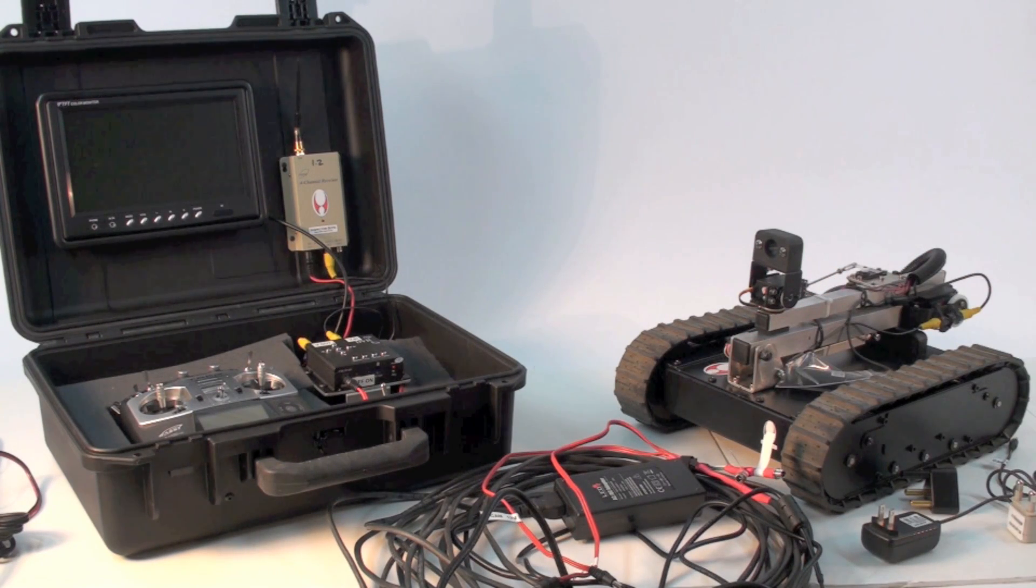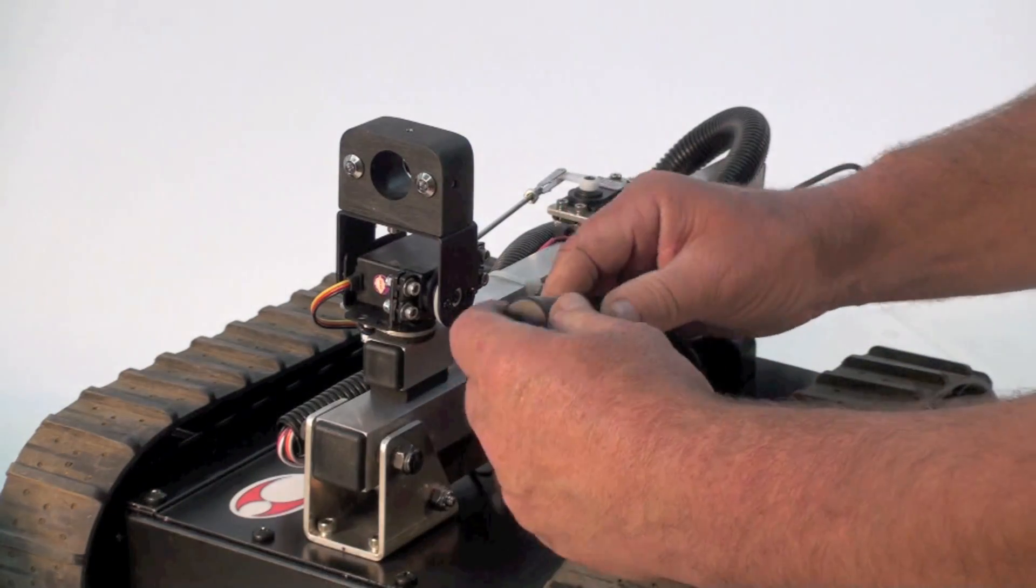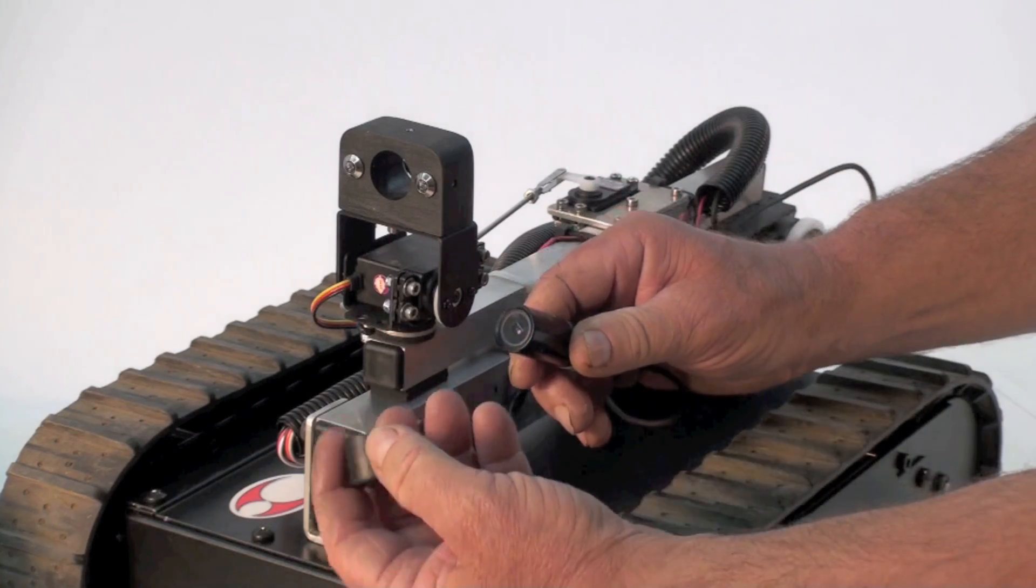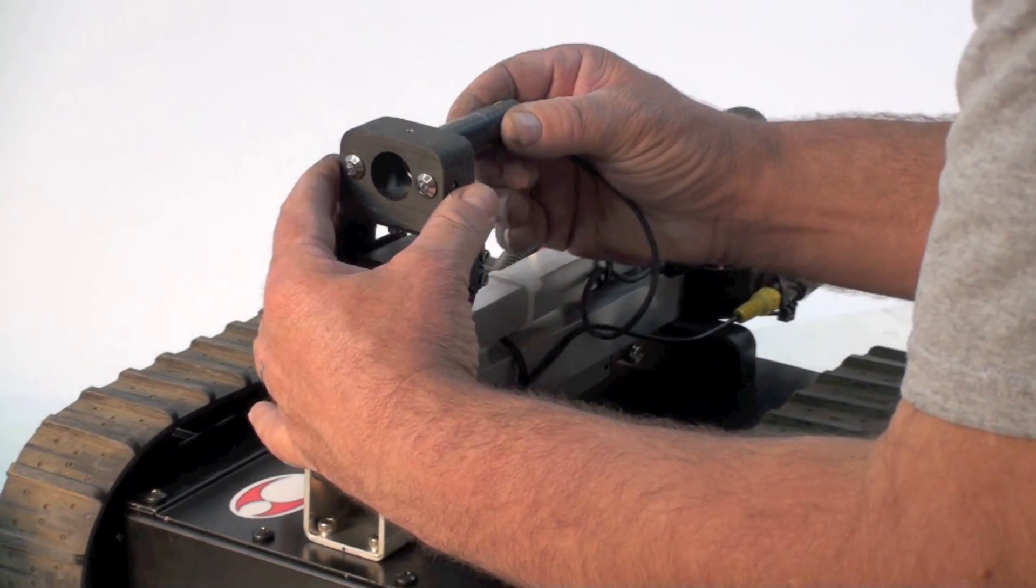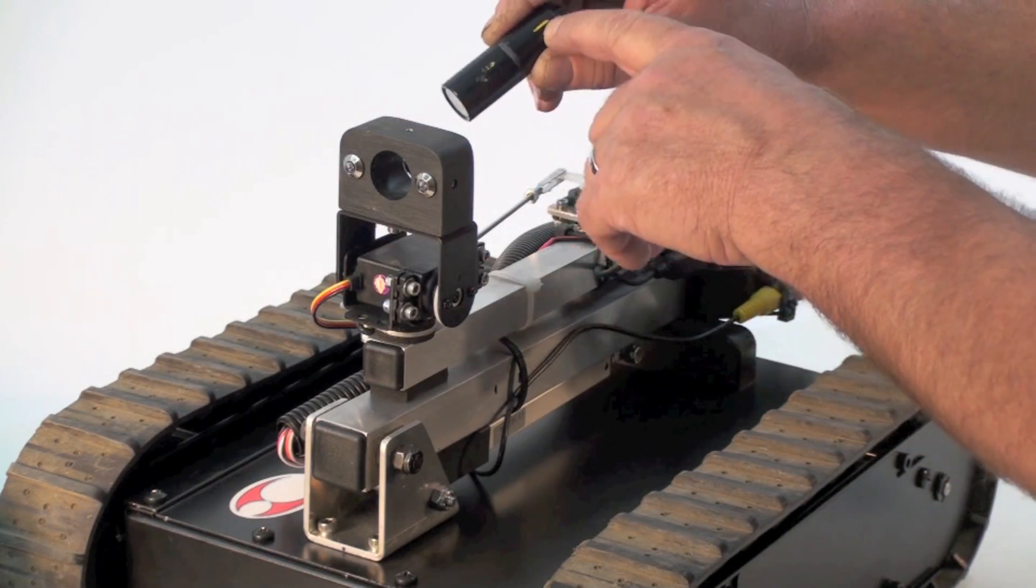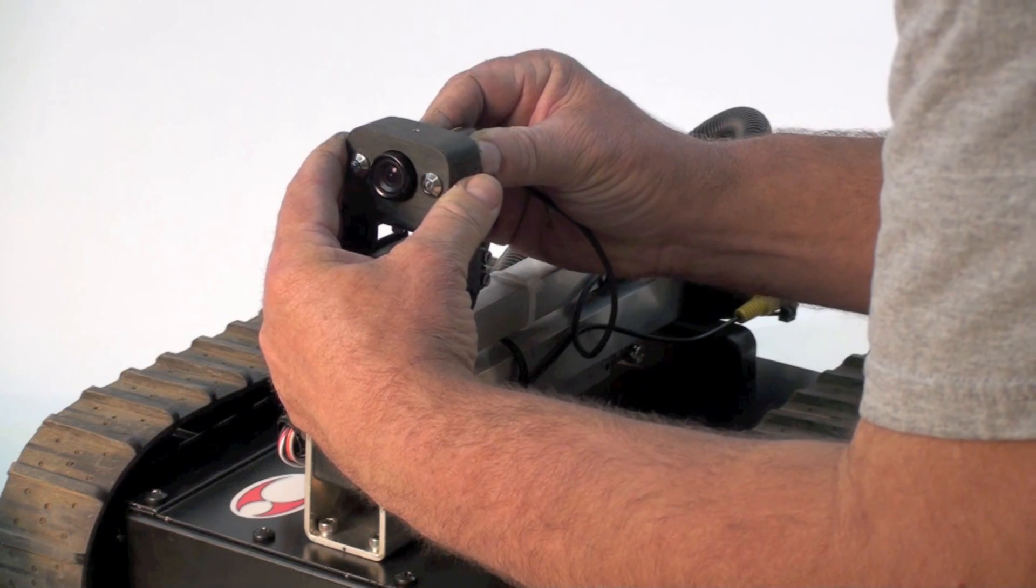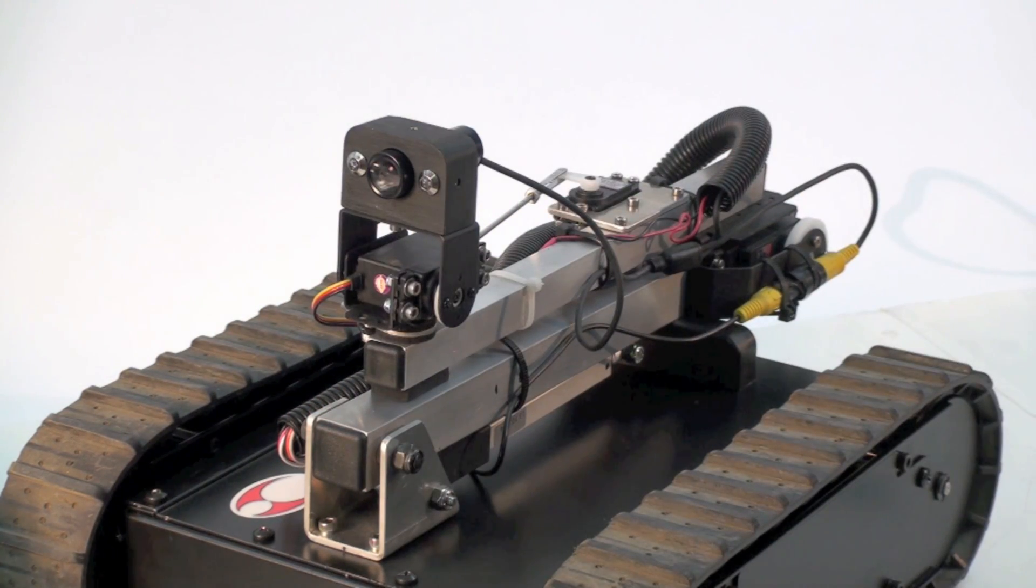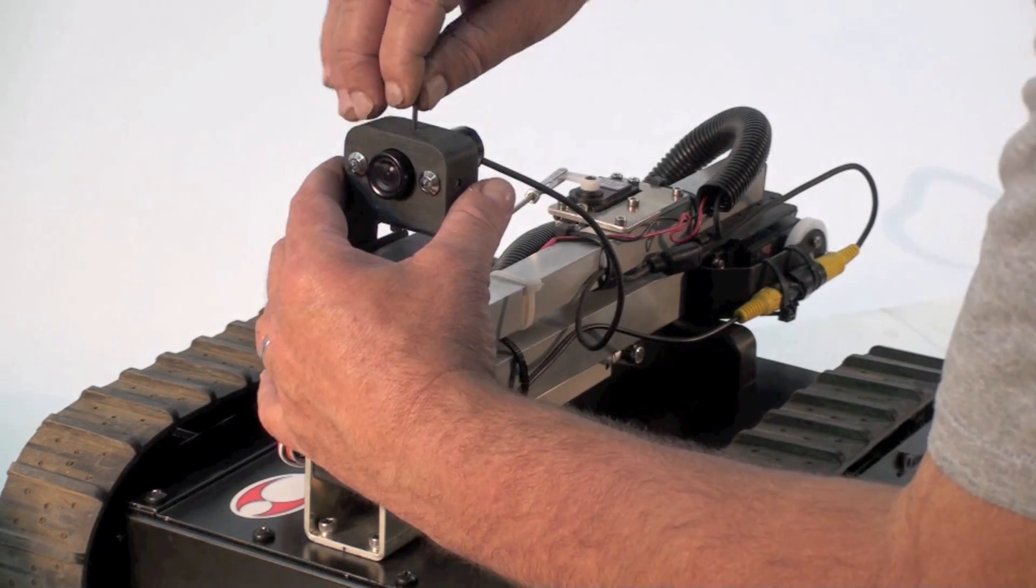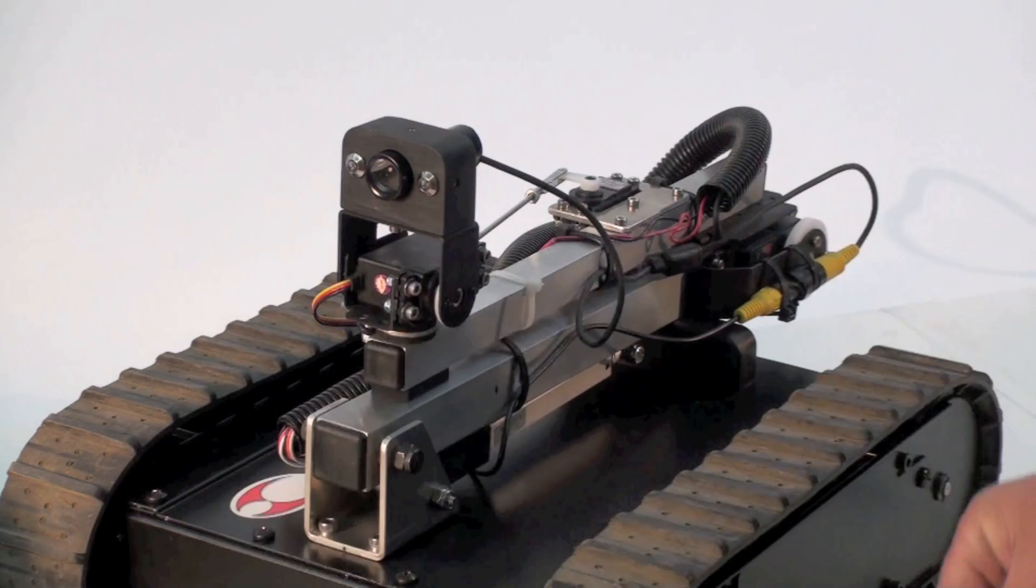The first thing you want to do is unpack everything and make sure everything is here. The camera is wrapped separately to protect it during shipping. Simply remove the packaging and this lens cap and slide it into this camera mount. There's a little yellow line here which indicates the top. Slide it up to about a quarter inch exposed through the front and just tighten it using this little Allen set screw just enough to hold it in place.